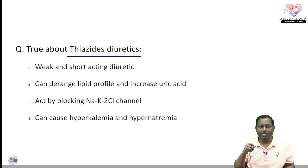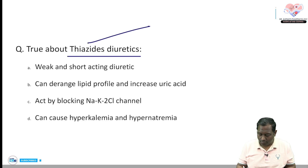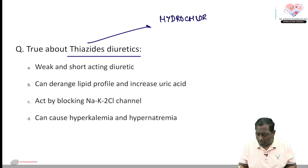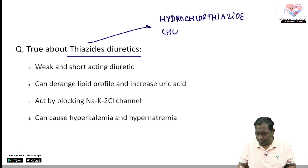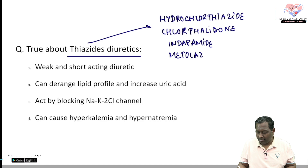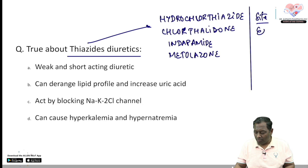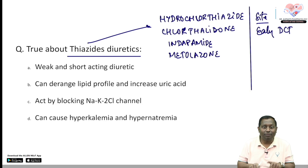Next topic: thiazide and thiazide-like diuretics. Drugs in this class include hydrochlorothiazide, chlorthalidone, indapamide, and metolazone. Their site of action is the early part of the distal convoluted tubule (DCT). They work by competitively inhibiting the NaCl co-transporter.